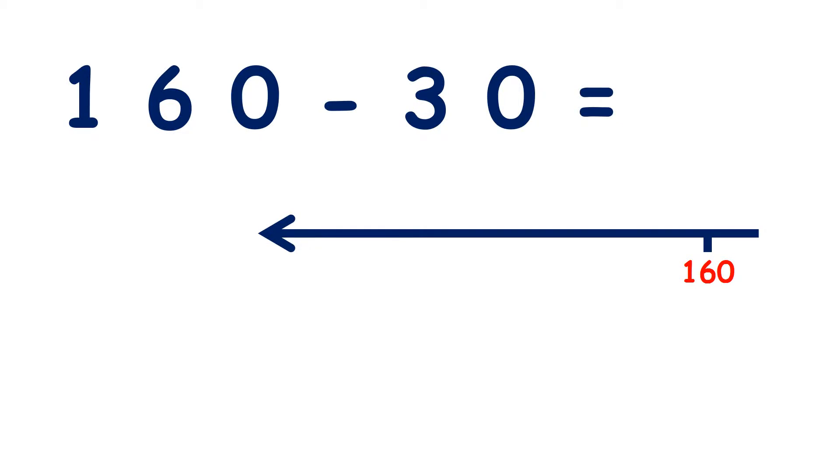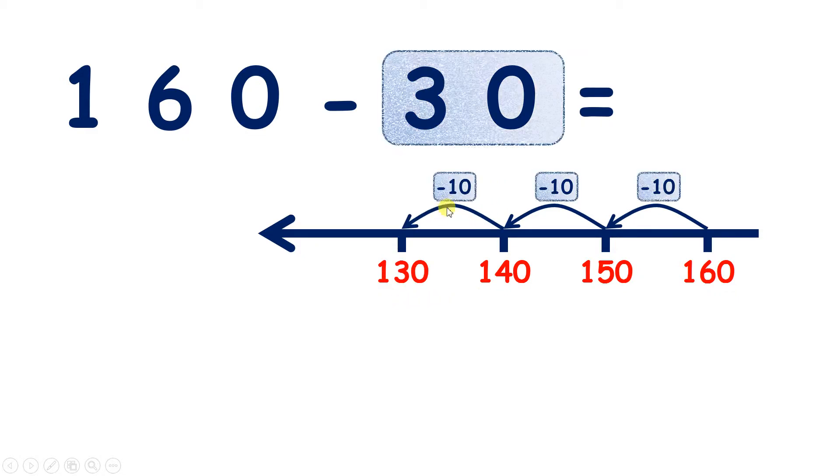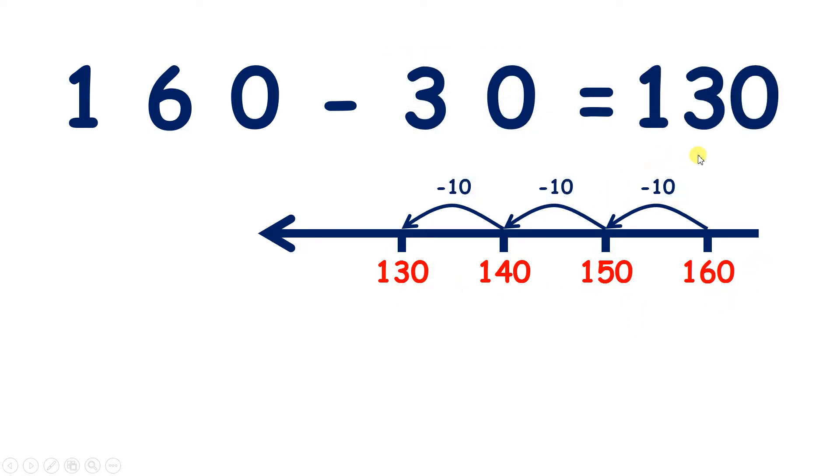Now let's subtract with multiples of 10. So if we count back 30, if we count back three tens from 160, we have 150, 140, 130. So we've subtracted three tens to give us 130.